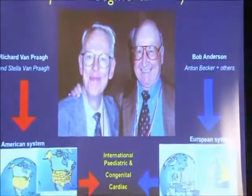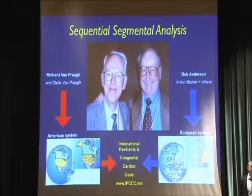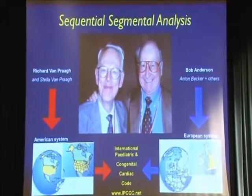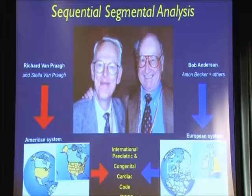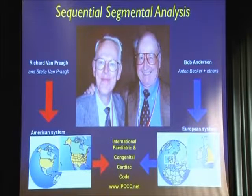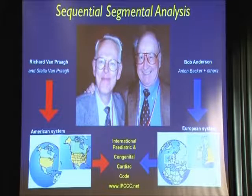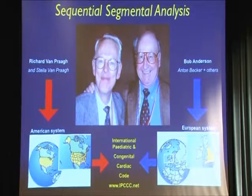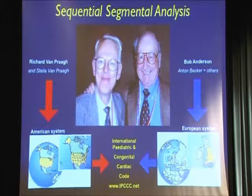We're going to start the session by talking about the theory of how we analyze patients with congenital heart disease, or any patient, by echo or morphologic analysis. The process we're going to discuss is sequential segmental analysis. Many of you will recognize Bob Anderson on the right-hand side and Richard Van Praag on the left-hand side. Over the years, two systems have been promoted on either side of the Atlantic, and they've now been joined together into an international pediatric cardiology code. The overall understanding of the way we analyze congenital heart disease is pretty much now set in stone.